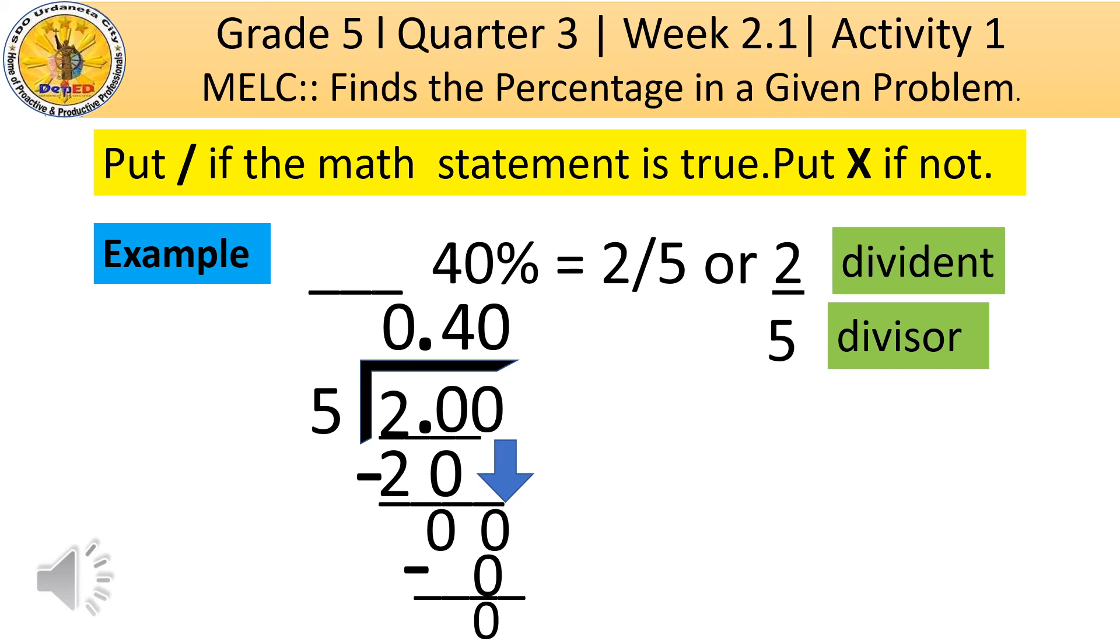We get 0. The quotient is 0 and 40 hundreds. And, it is equivalent of 40%. Therefore, 40% is equal to 2 over 5. So, put check on the blank because the math statement is true.